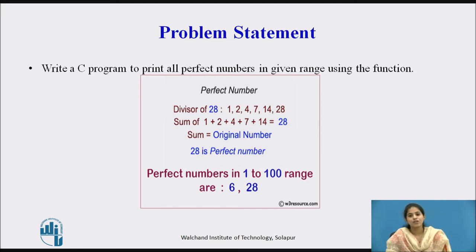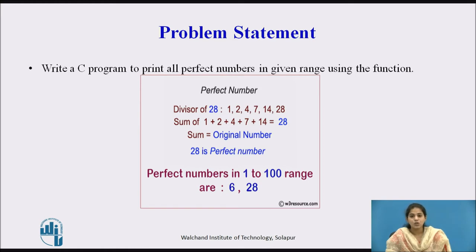For example, 28 is a perfect number. The divisors of 28 are 1, 2, 4, 7, 14, and 28. We calculate the sum of divisors excluding the original number — so the sum of 1, 2, 4, 7, and 14 equals 28. The sum equals the original number, so 28 is a perfect number. The perfect numbers in the range 1 to 100 are 6 and 28.